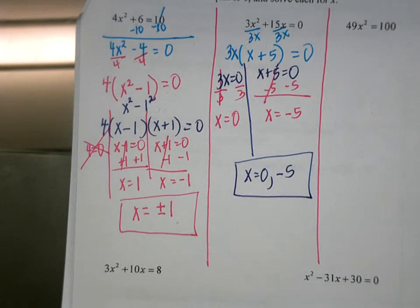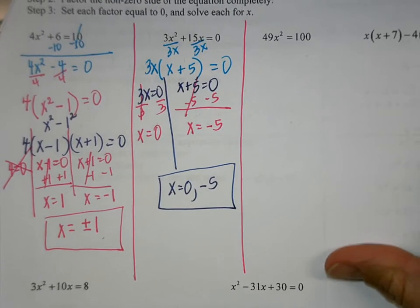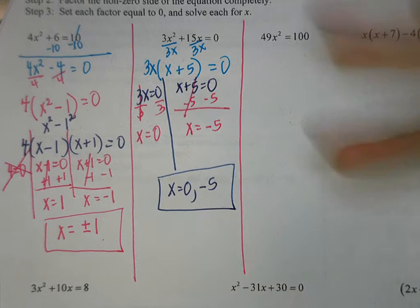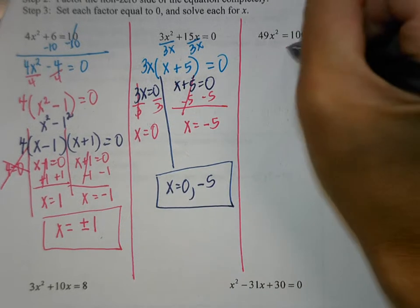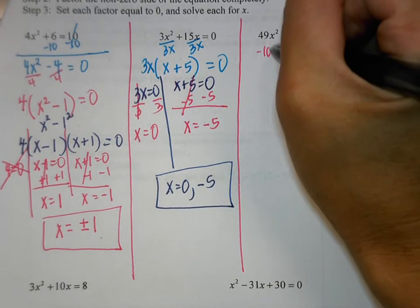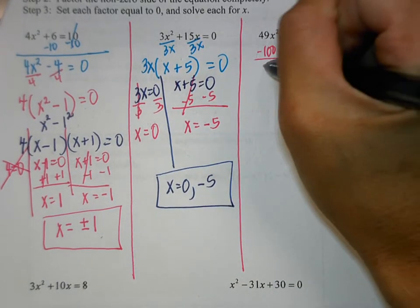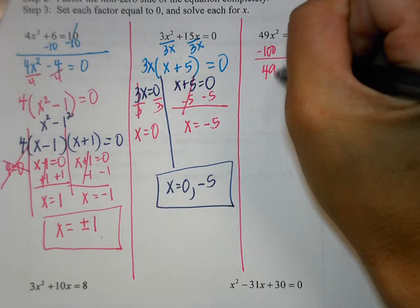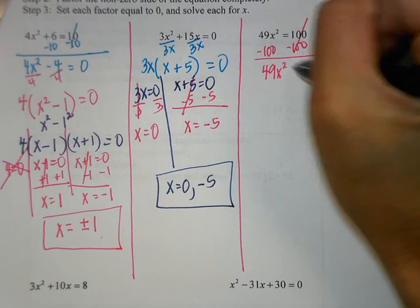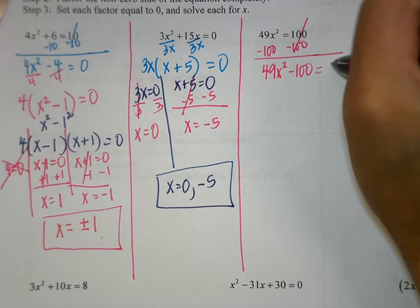Next problem — is it set equal to 0? No. What will I do? Subtract 100 from both sides. These eliminate, and I have 49x squared minus 100 equals 0.